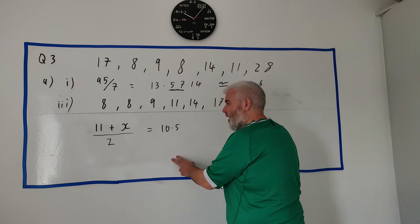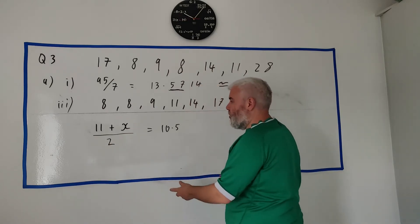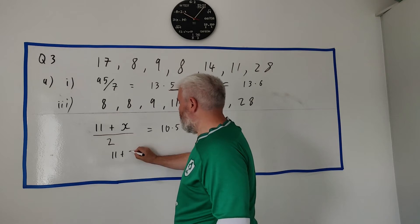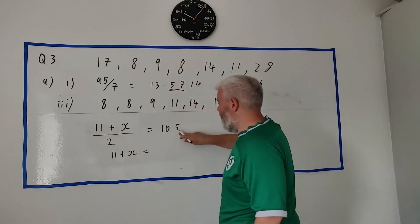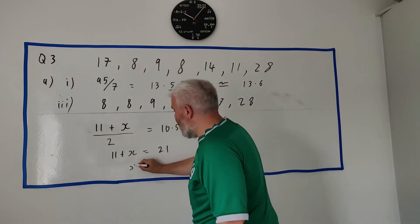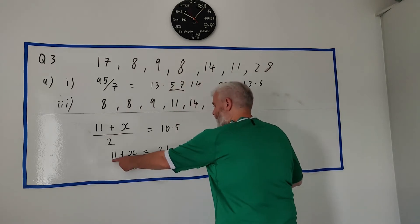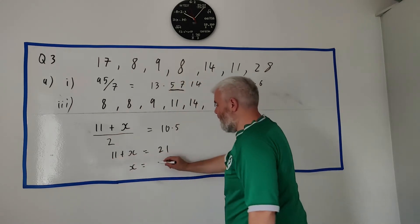Work this out by algebra - we get rid of the 2, multiply both sides by 2, we get 11 plus x is equal to - times 2 - 21.